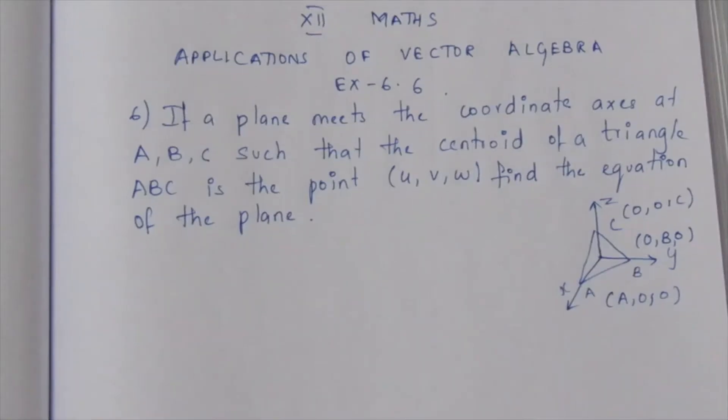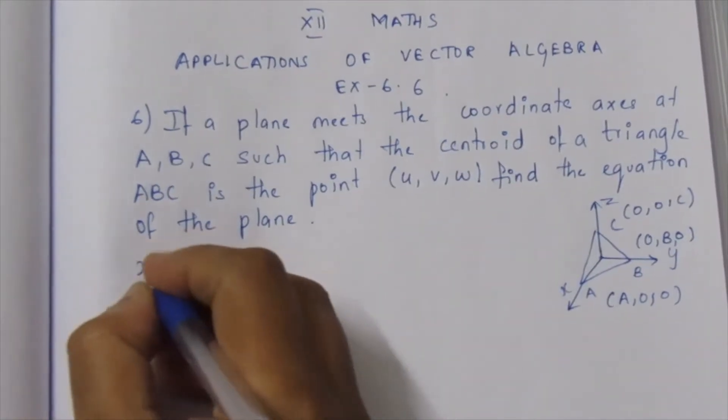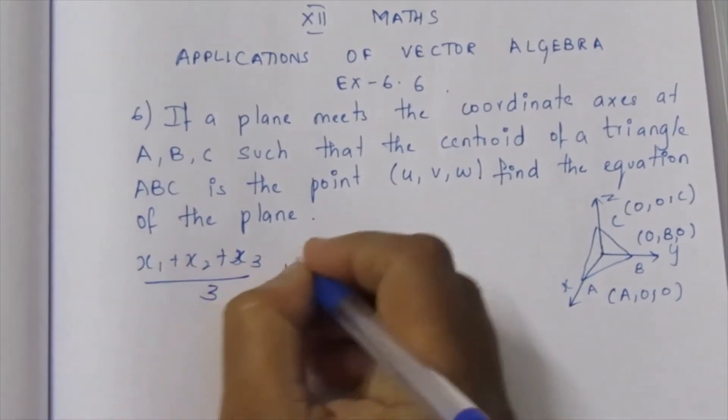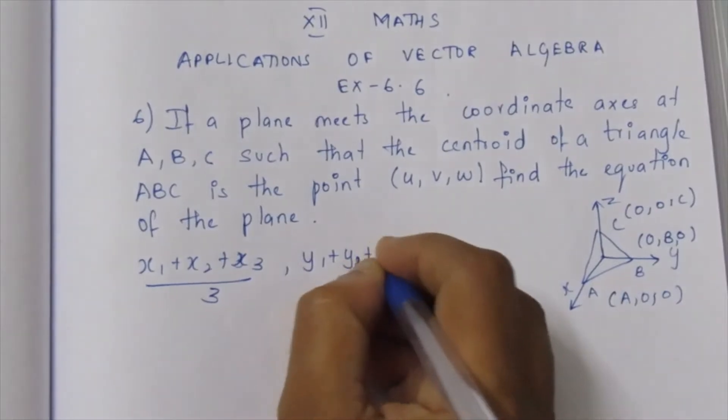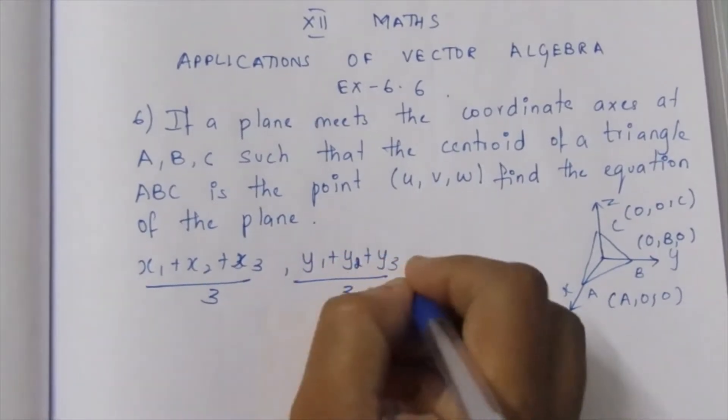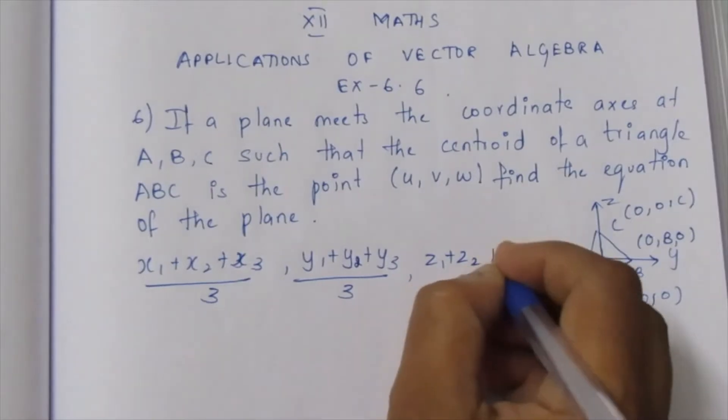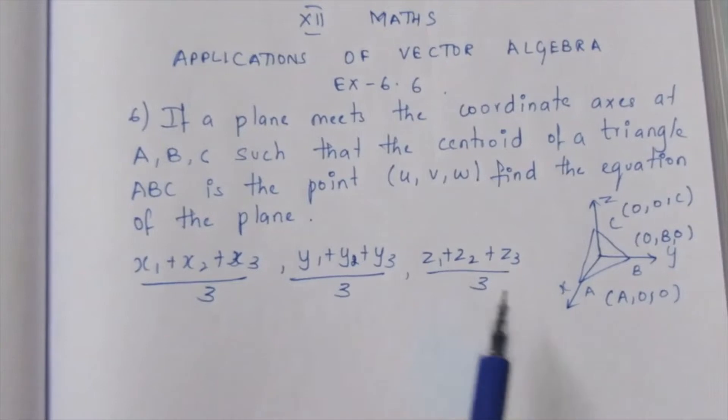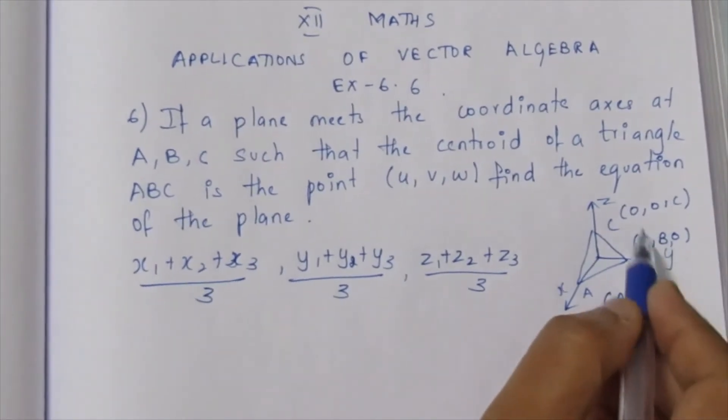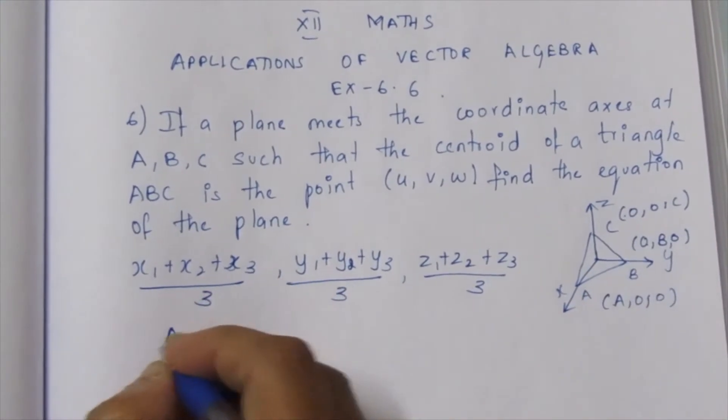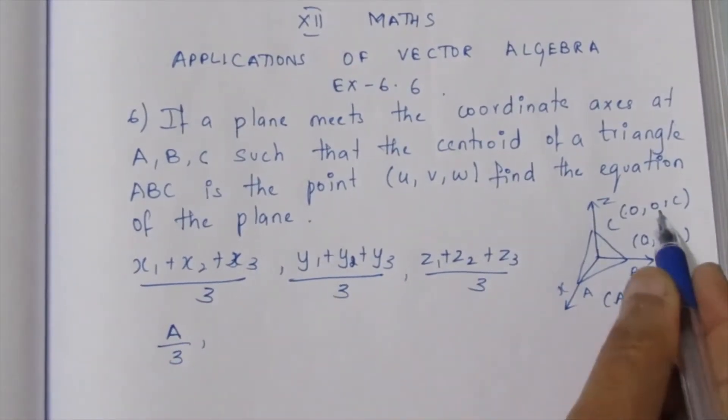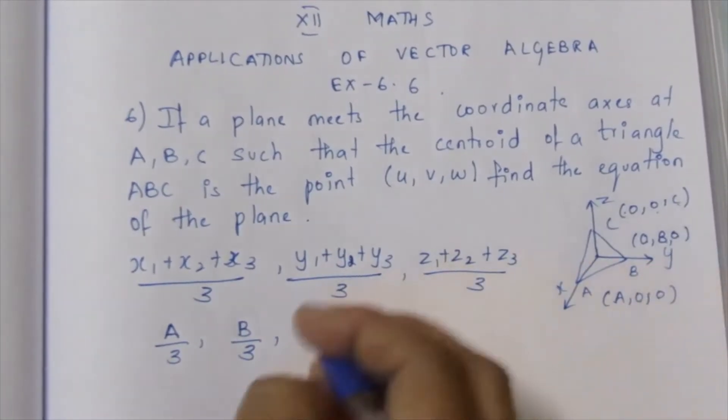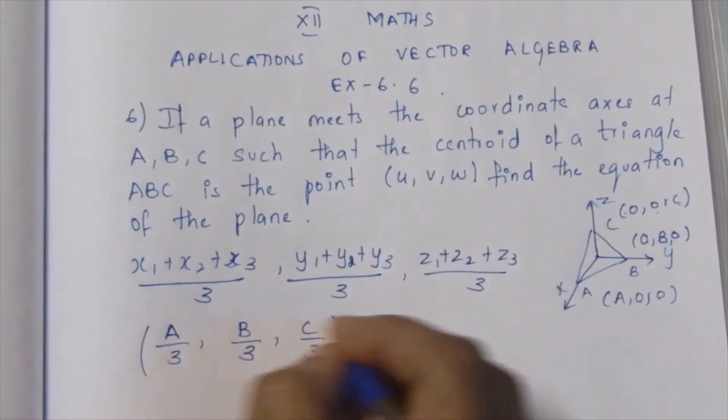Now we apply the centroid formula. The centroid formula is (x1 + x2 + x3)/3, (y1 + y2 + y3)/3, (z1 + z2 + z3)/3. So we get (a + 0 + 0)/3, (0 + b + 0)/3, (0 + 0 + c)/3, which equals (u, v, w).